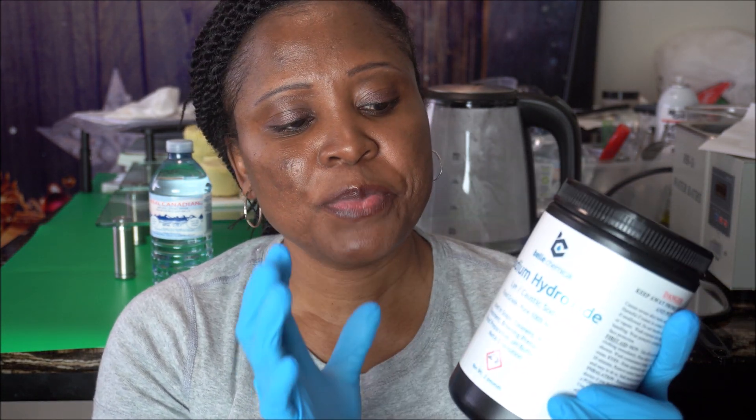The first thing you need to make soap is caustic soda, also called lye solution. This is a very highly corrosive chemical, so you have to be careful when using it. This is the main product we use to make soap.